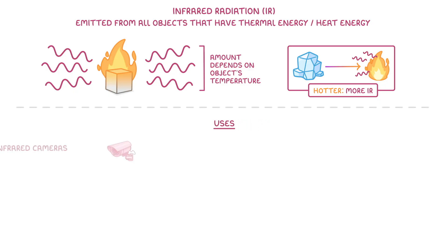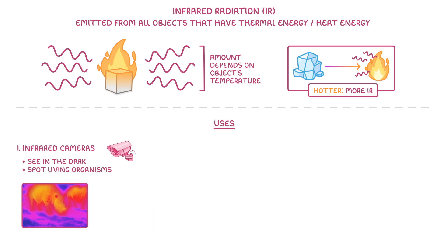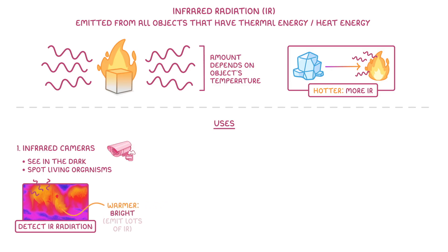One use of this is in infrared cameras that help us to see in the dark, and in particular to help us spot living organisms. By using a special camera that can detect infrared radiation, we can see which areas are hot and which areas are cold by measuring how much infrared radiation they emit. And so animals, which are fairly warm, will appear quite bright because they emit lots of infrared radiation.